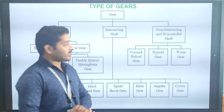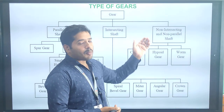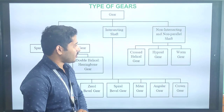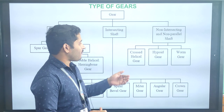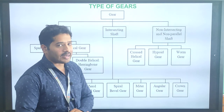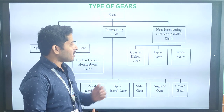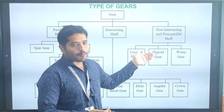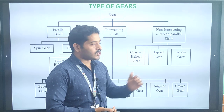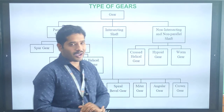In the non-intersecting and non-parallel shafts category, we have three types: cross helical gear, hypoid gear, and worm gear.